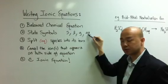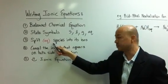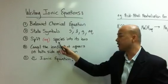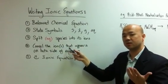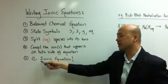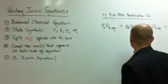They can be solid, liquid, gas, or aqueous. Step three is to split all the aqueous species, whether reactants or products, into its ions, after which you cancel the ions that appear on both sides of the equation. Last but not least, of course, you have your Ionic Equation. Now, let's take a look at an example.